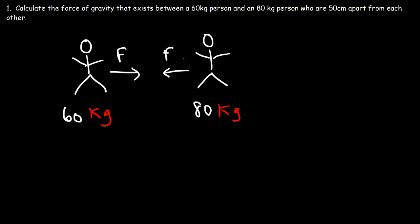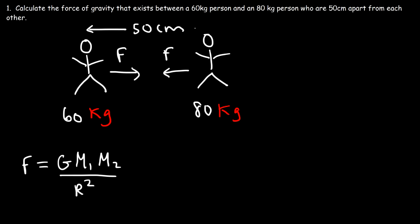Now the way to calculate it is to use this equation. It's equal to G times the mass of the first person times the mass of the second person divided by the distance between them squared. Now the distance between them is 50 centimeters, and we need to convert that to meters. One meter is 100 centimeters, so 50 centimeters is equivalent to 0.5 meters.